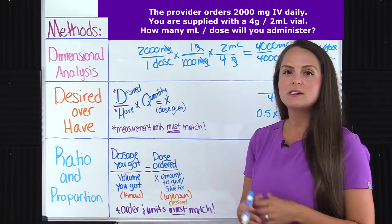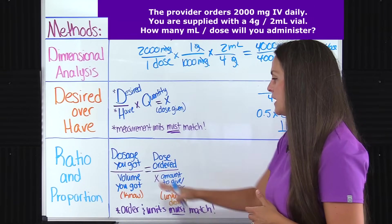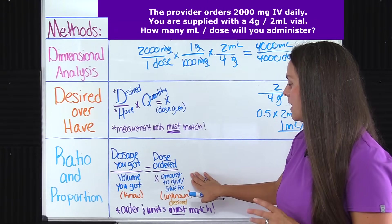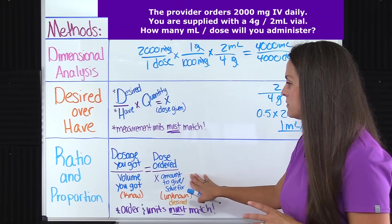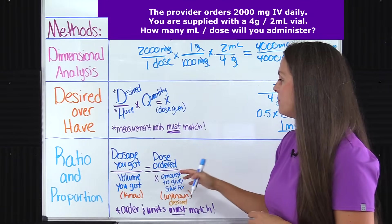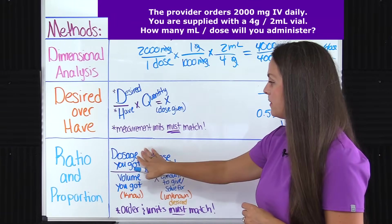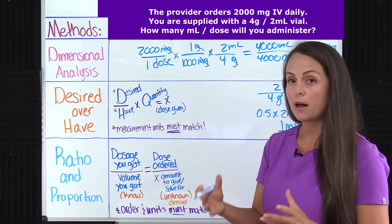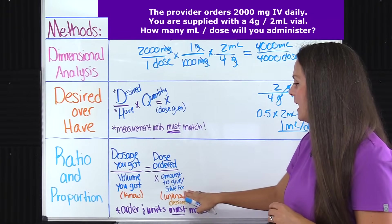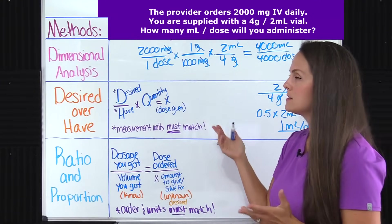And finally, let's solve this problem using ratio and proportion. With this method, we are setting up an equation using ratios — a known ratio and an unknown ratio, which is our desired ratio. We want to solve for part of the unknown ratio to get our answer. Ratios are expressed as fractions. For the known ratio, we look at the dosage we have on hand from pharmacy and put that over the volume we've been supplied. That should be equal to the dose ordered by the provider over X, because we don't know that yet — that's what we're solving for, in milliliters.